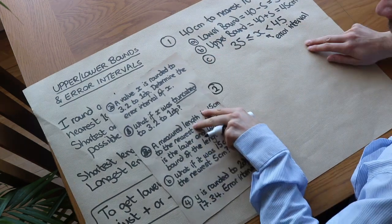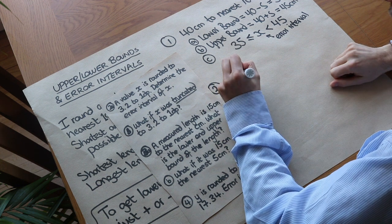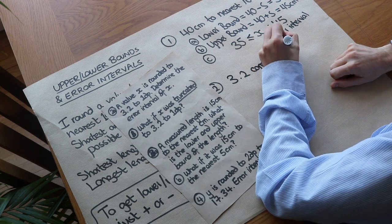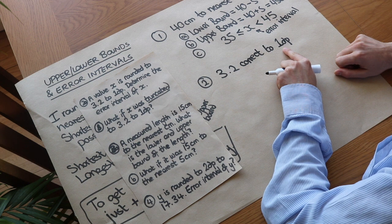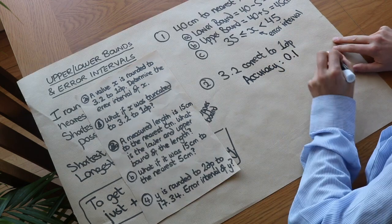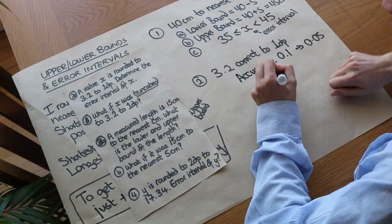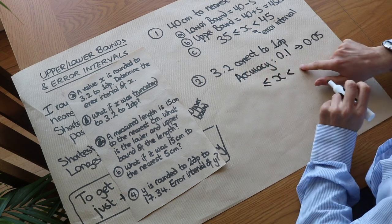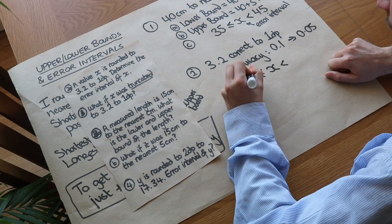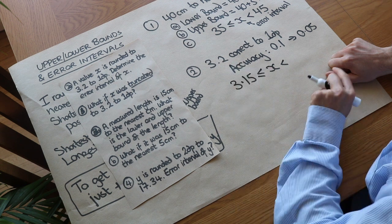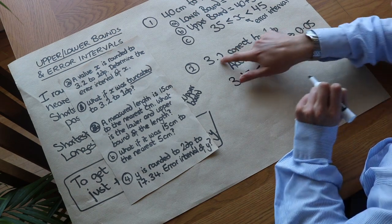A value X is rounded to 3.2 to 1 decimal place. Determine the error interval of X. One decimal place means correct to the nearest tenth, so the accuracy is 0.1 and half of that is 0.05. The lower bound is 3.2 minus 0.05, which gives 3.15 — and 3.15 to 1 decimal place is indeed 3.2. It can't be any lower: 3.14 would be 3.1 to 1 decimal place. Adding 0.05 to 3.2 gives the upper bound of 3.25. A useful trick: put a 5 on the end for the upper bound, and reduce the last digit by 1 and put a 5 on the end for the lower bound — though this only works for nearest whole, one decimal place, two decimal places, etc.